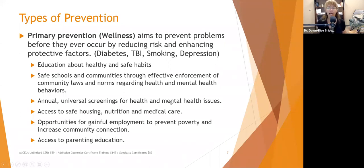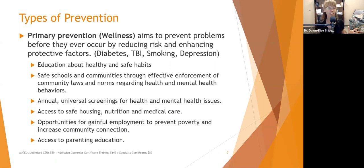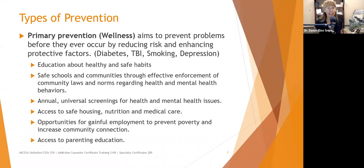Primary prevention is wellness — this is when we're preventing something from ever occurring. We don't want people to ever get diabetes, traumatic brain injury, start smoking, or become depressed. So how do we do that? We can provide education about healthy and safe habits to prevent these sorts of things. We'll use traumatic brain injury as an example in this set of slides.